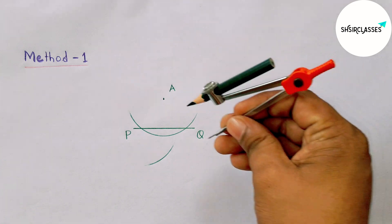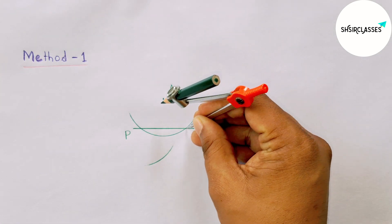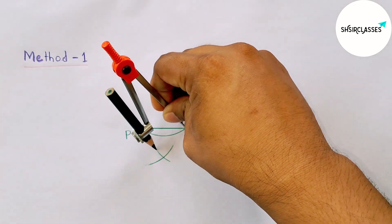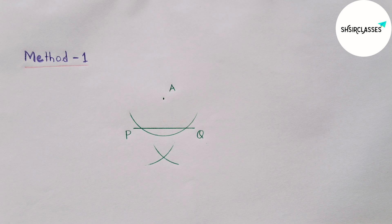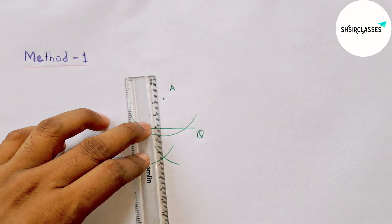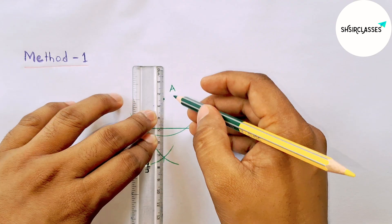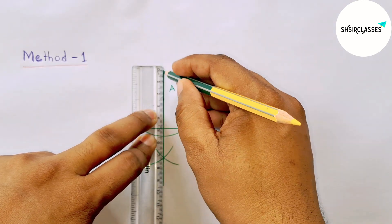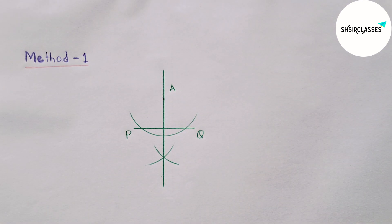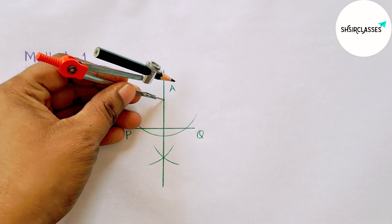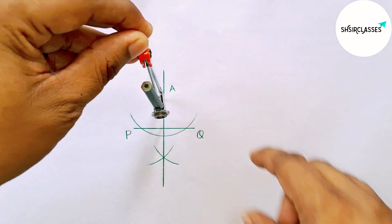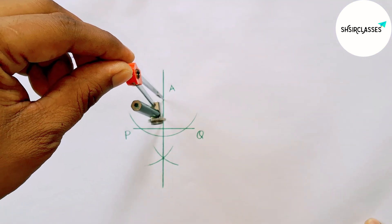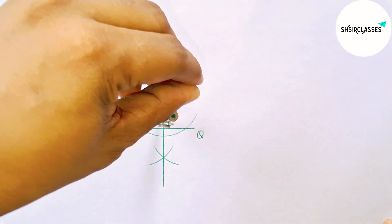Putting the compass with the same length and drawing an arc, then again with the same length putting the compass and cutting here. Joining this — this gives a perpendicular line to the line PQ.